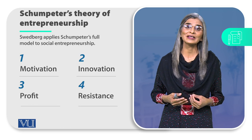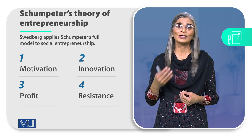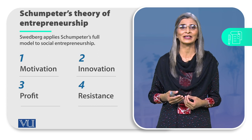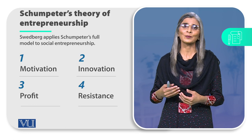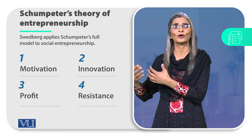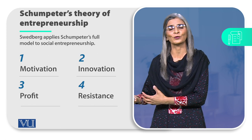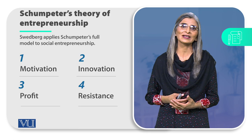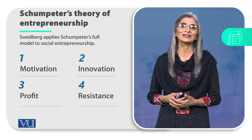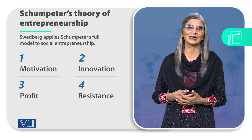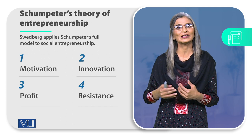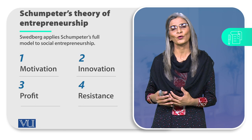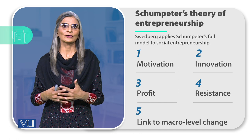Resistance हमारے beliefs، ہمارے political ideas، اور rules and regulations کی وجہ سے بھی ہو سکتی ہے — کسی خاص situation میں کوئی قانون بن گیا اور اگر situation بدل گئی ہے تو وہ قانون problem create کر رہا ہے، لیکن لوگ اسے بدلنے سے resist کرتے ہیں۔ Social entrepreneur کا رول یہ ہے کہ وہ ان rules، regulations، values اور norms کو target کرے اور resistance کو overcome کرنے کی کوشش کرے۔